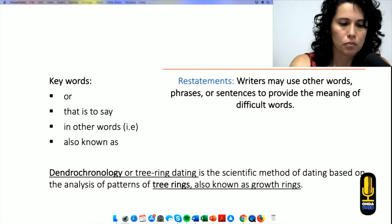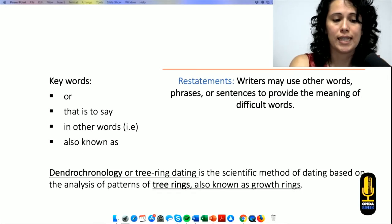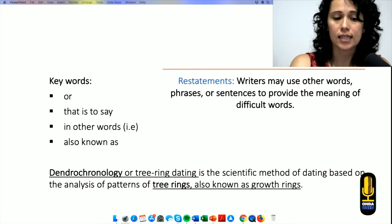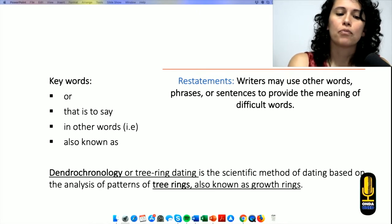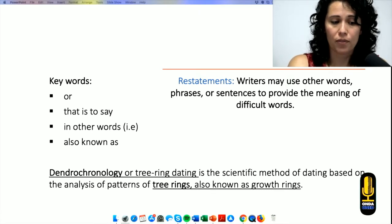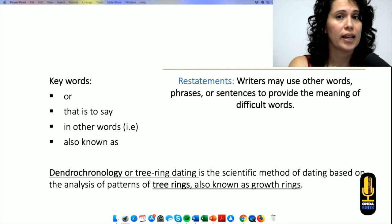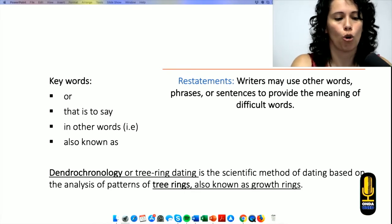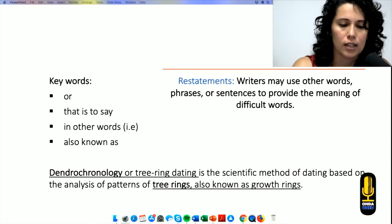Let's move on. Another one will be restatements. Restatements are words or phrases or even sentences that the writer provides to explain the meaning of difficult words. For example, if we have dendrochronology, we have no idea what it is. But if we continue reading, we can see the word or that gives us the idea that he's comparing.